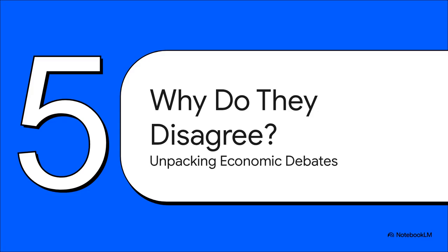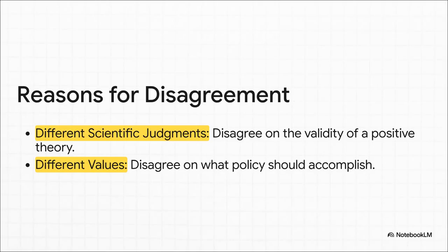This whole distinction really helps us answer a very common question: if economics is supposed to be a science, why do economists seem to disagree all the time? It feels like you can always find one to argue the complete opposite of another. Well, it turns out most of those disagreements really just boil down to two main reasons. First, they might just have different scientific judgments — they might disagree on a positive theory of how the world actually works. Or second, they just have different values — different normative ideas about what the goal of a policy should even be in the first place.